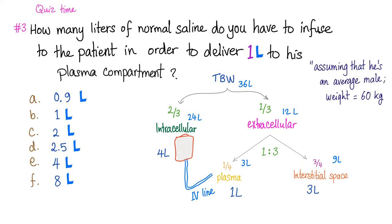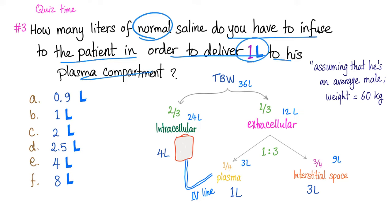First, let's answer the question from last time: how many liters of normal saline do you have to infuse to deliver one liter to the plasma compartment? Normal saline is isotonic — it has the same tonicity or osmolality as plasma. The correct answer is 4 liters. Let me explain why.